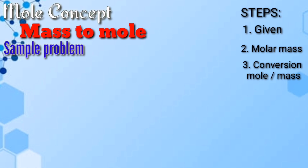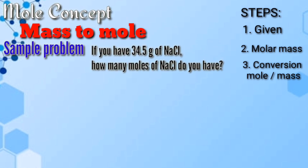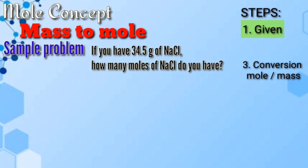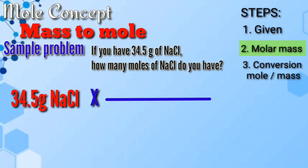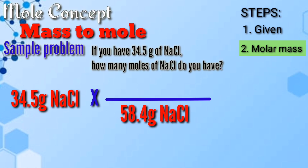Next problem: if you have 34.5 grams of sodium chloride, how many moles of sodium chloride do you have? First step: write the given. Our given is 34.5 grams of NaCl. Then get the molar mass. The molar mass of NaCl is 58.4 grams per mole.